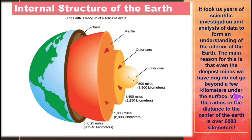The main reason is that even the deepest mines we have dug do not go beyond a few kilometers under the surface, while the radius or the distance to the center of the earth is over 6000 kilometers. So geologists used different methods combining technology to find the internal structure of the earth.